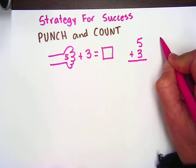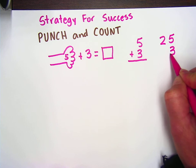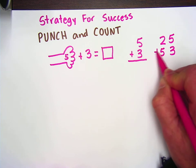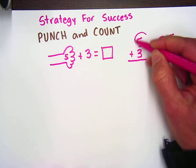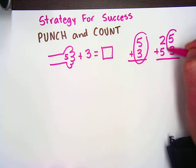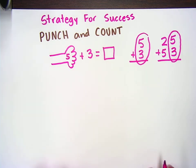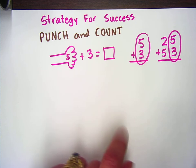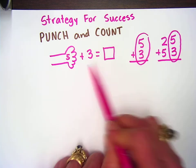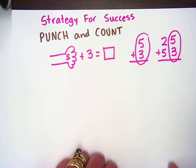It might be in a really complicated math problem like this, where you have the five plus three, and you have to come up with the answer very quickly. Well, with punch and count, all we do is we find the larger number, the five, and then we just punch it and we count it like this.